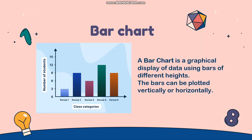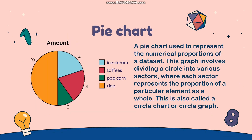First, let's understand what a pie chart is. A pie chart is used to represent the numerical proportions of a data set. These graphs involve dividing a circle into various sectors, where each sector represents the proportion of a particular element as a whole. This is also called a circle chart or circle graph.